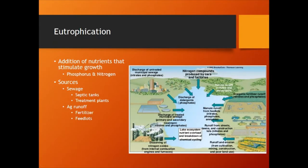Now let's switch to eutrophication. What is eutrophication? Eutrophication is when you add a bunch of nutrients to a lake — basically algae grow, lots of stuff grows. It's not surprising: you add fertilizer, things grow. In this case, things being algae.